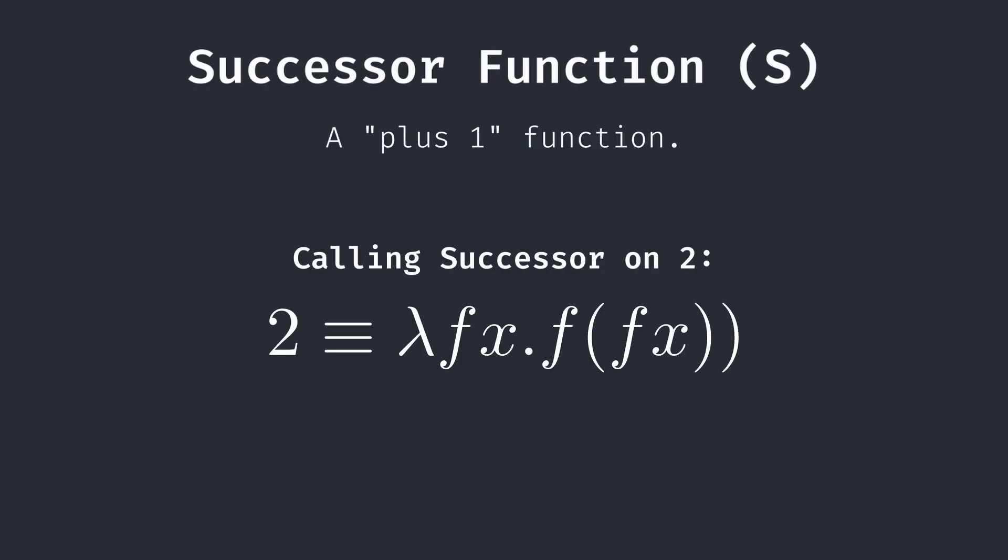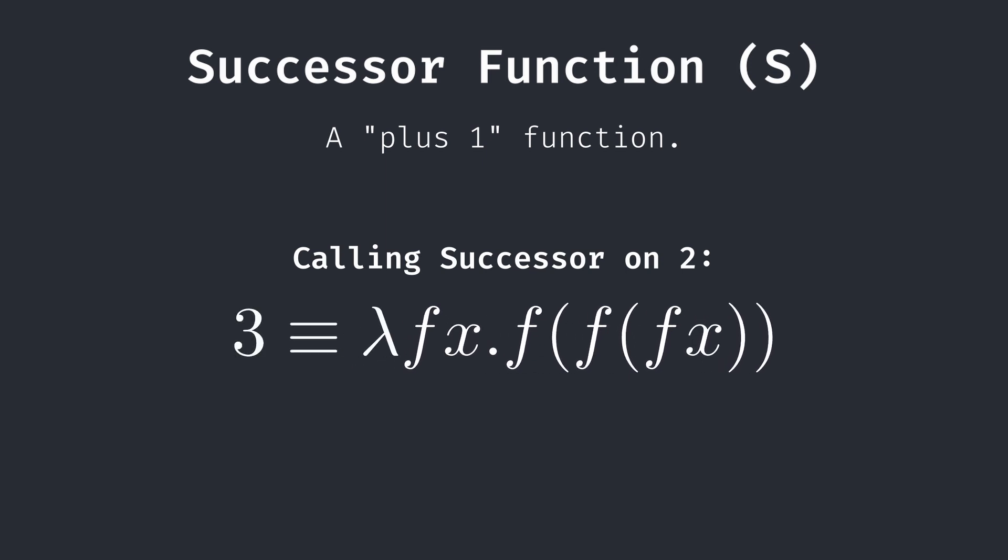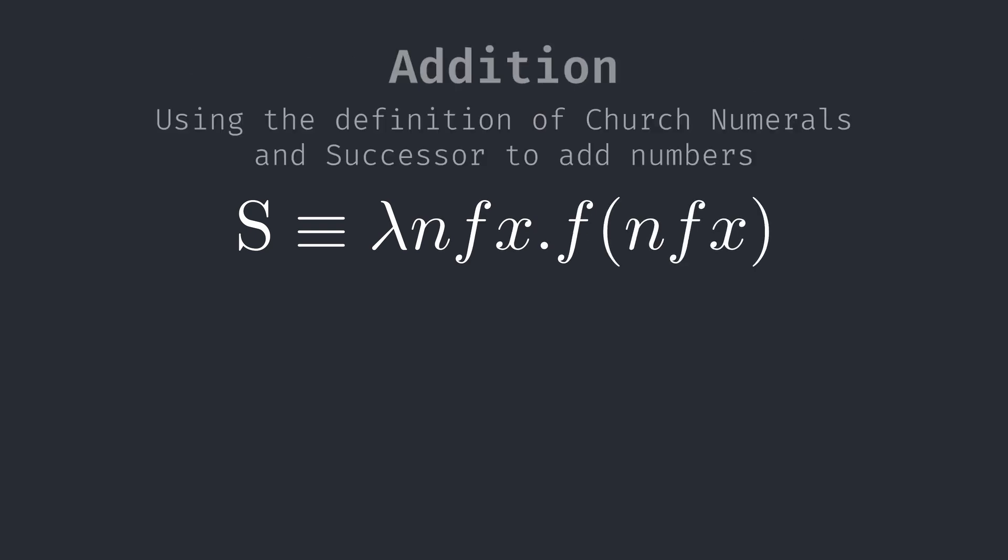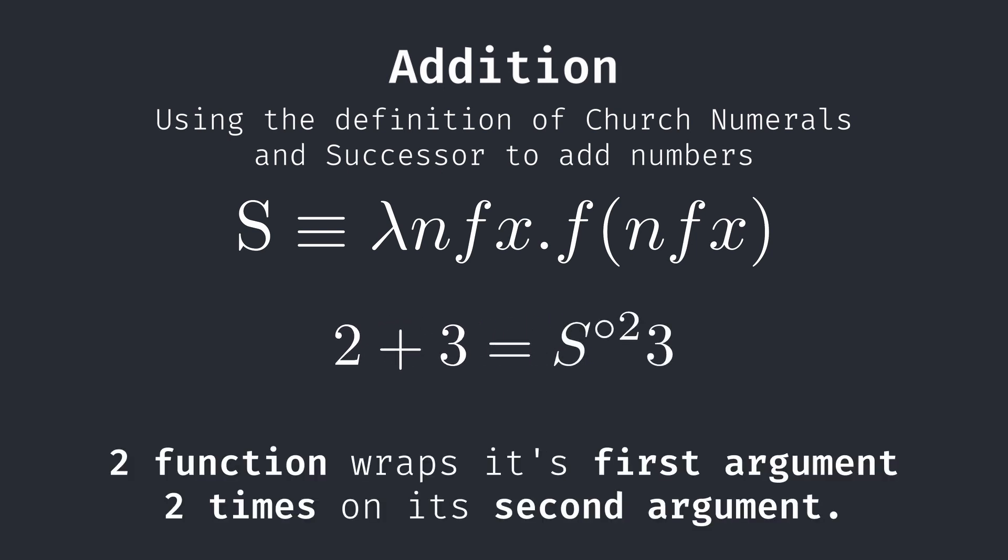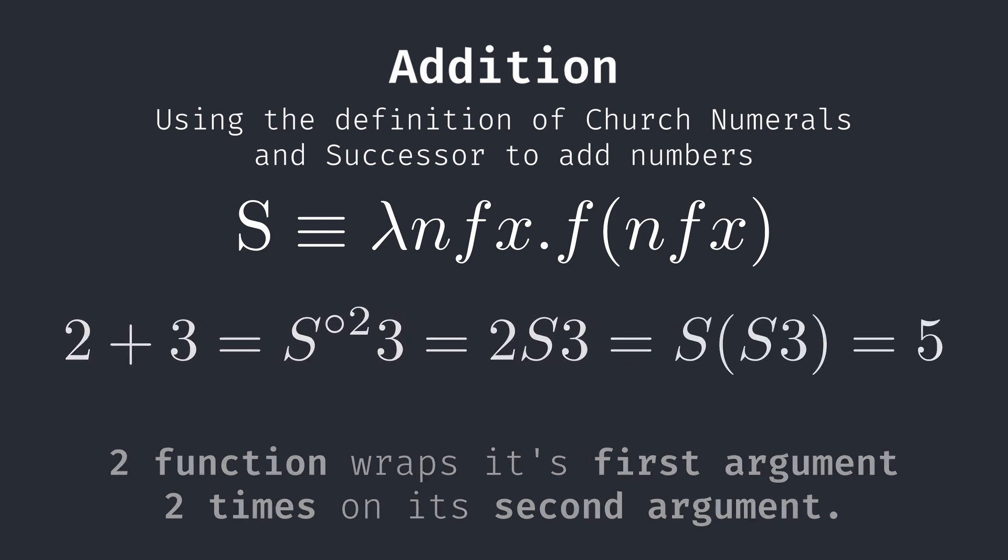In order to see how this works, let's first define what is known as the successor, or plus 1 function. First, we take our input church numeral and apply it to f and x. After substituting, this removes the function part. Now we simply wrap it in one more instance of f. To put it back into church numeral format, we put the result in lambda f x. Our final function looks like this. Let's define addition. If we want to add 2 and 3, we simply call the successor function 2 times on 3. Remember that the church numeral 2 literally means executing its first argument 2 times on its second argument. So we can just write 2 successor 3, which reduces to successor of successor of 3 or 5. Thus, addition can be simply defined as such.